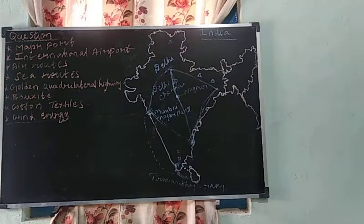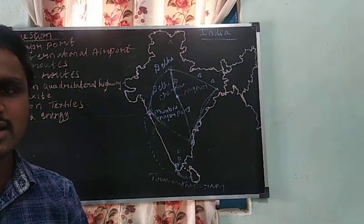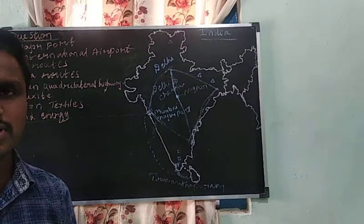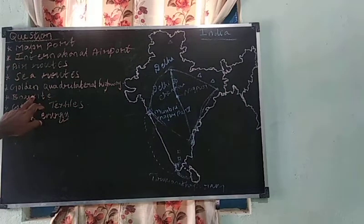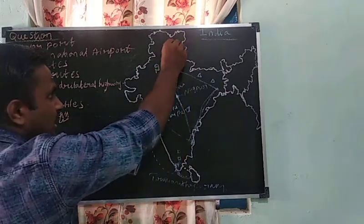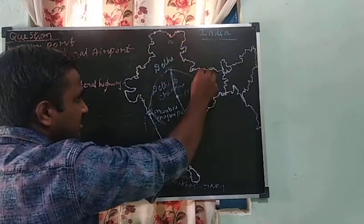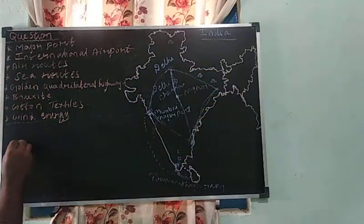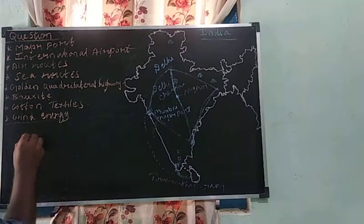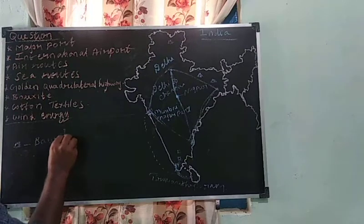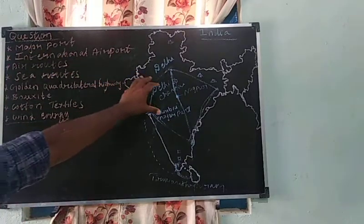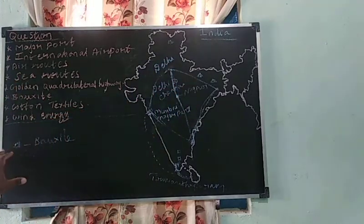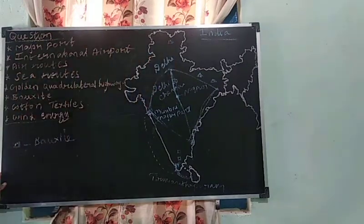Next one is bauxite mineral. Many minerals are available such as iron, bauxite, copper, gold, and platinum. For the bauxite question, mark the famous places using the given symbol. If writing inside the map looks cluttered, you can write the label outside the map while keeping the same symbol inside.